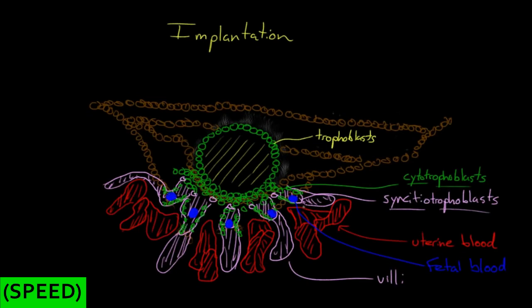And as you can see, the fetal blood vessels are in really close contact to the uterine blood vessels. Now, they're not actually mixing together because there's this membrane of trophoblasts in between them. But they're close enough that nutrients from the uterine blood can diffuse into the fetal blood. And waste products from the fetal blood can diffuse out into the uterine blood. And over time, this structure continues to grow with the developing embryo.